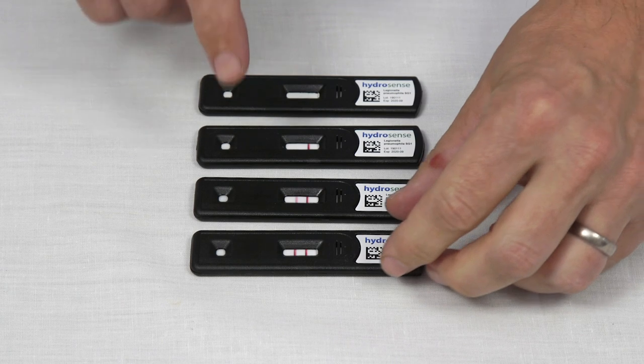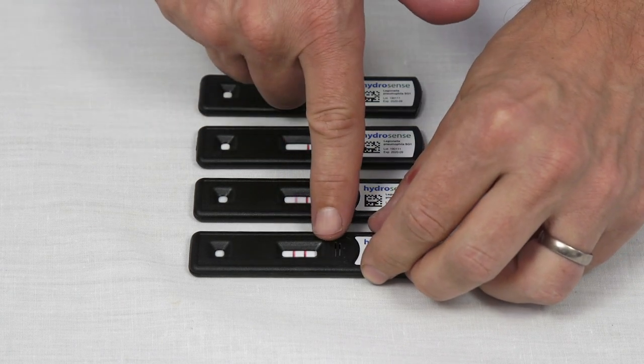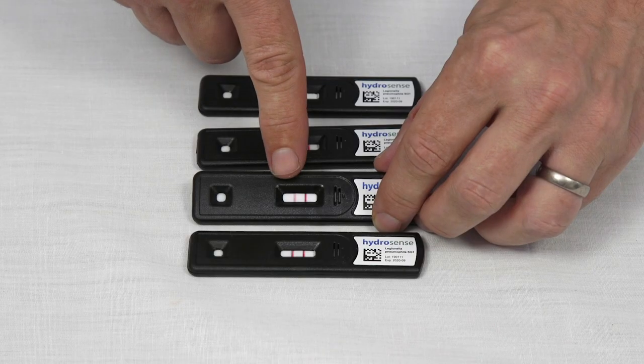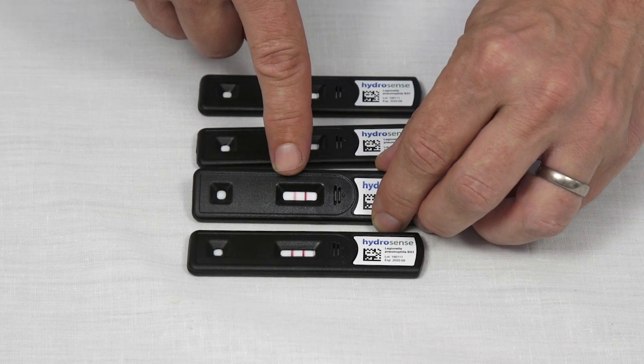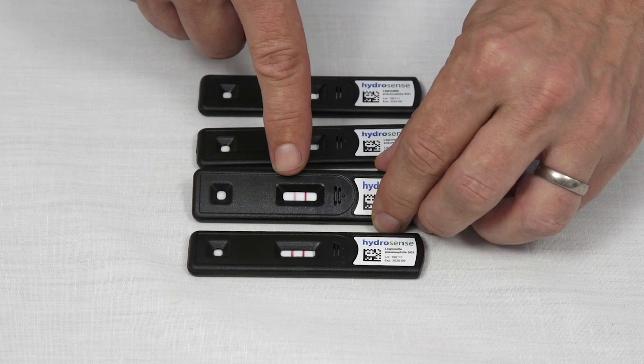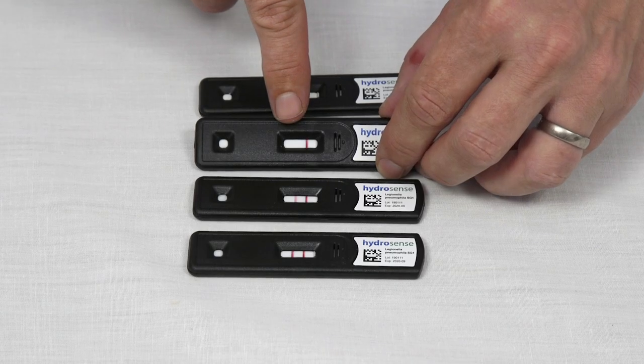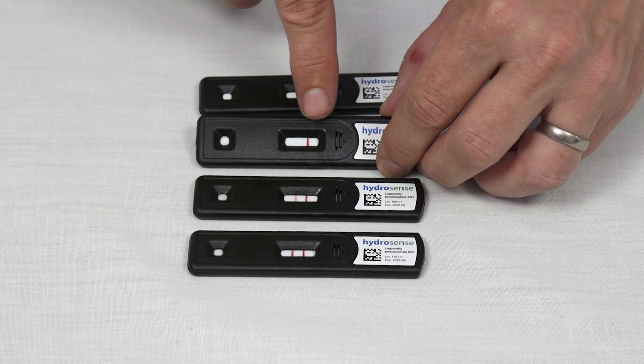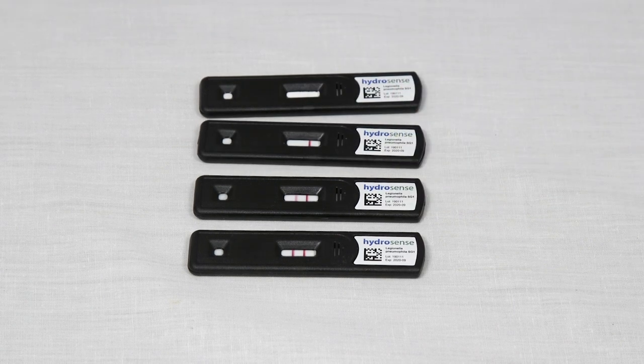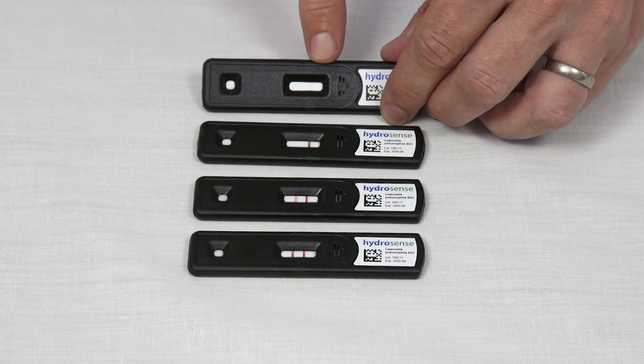After 25 minutes of running time the test can be read. The test is composed of two lines, a test line and a control line. If both lines are present then Legionella pneumophila serogroup 1 has been detected above the cutoff of the test kit. The positive signal at the test line may well be weak but any line at this position indicates a positive. If no test line is present at the test line position but there is a control line then the test is negative and Legionella pneumophila serogroup 1 has not been detected. If no control line is present then the test is invalid and it should be repeated.